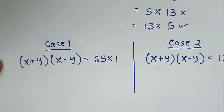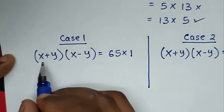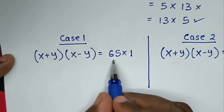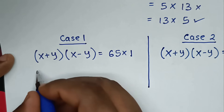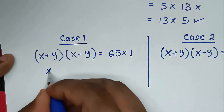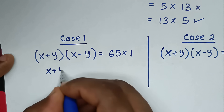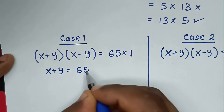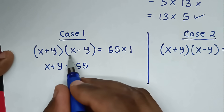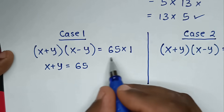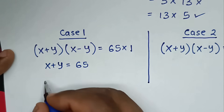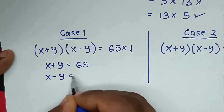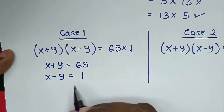From Case 1, we get the system of equations: x plus y is equal to 65, and x minus y is equal to 1.